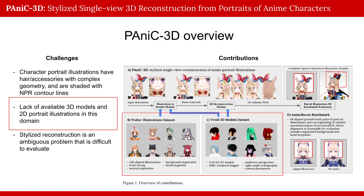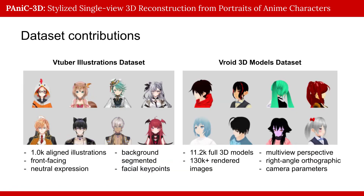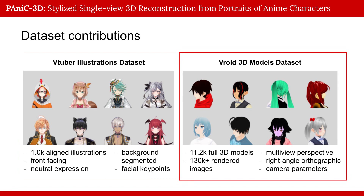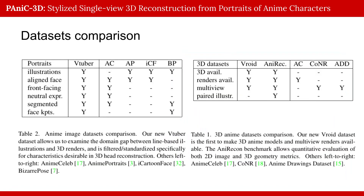Next, we tackle the lack of available 3D models and 2D portrait illustrations to train a reconstructor in the anime domain. We collect and process 1,000 VTubers with front-facing neutral expressions suitable for reconstruction, as well as 11,000 3D VROID models rendered to over 130,000 images with known camera parameters. Our 2D VTuber and 3D VROID sets are made publicly available for the research community, and have many desirable properties for the reconstruction task that aren't provided by existing anime datasets.